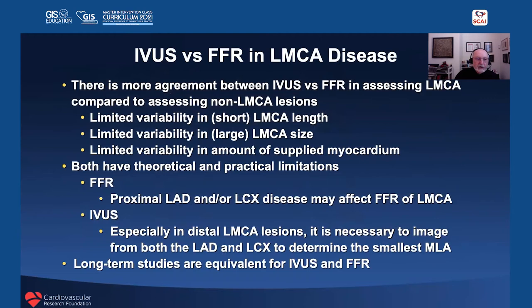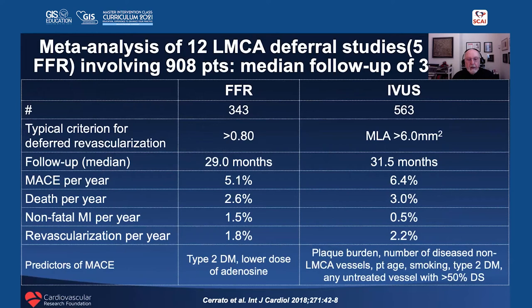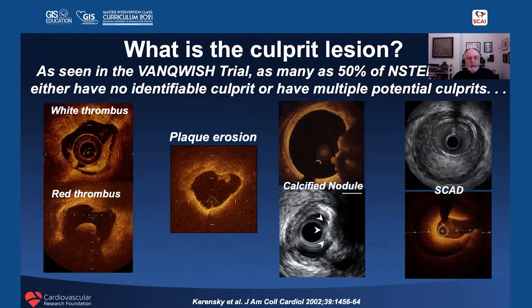The left main is different — of all coronary segments, it has the greatest angiographic inaccuracy and greatest variability in assessment. In one study from 2007, unanimous correct assessment of left main severity was only 29%. Here are two cases of ostial left main disease — which would you treat? It turns out you should treat neither — this is an angiographic artifact. The aorto-ostial junction is the least reliably assessed location by angiography. There are issues with both FFR and IVUS assessment of left main disease, but there is more agreement between IVUS and FFR for left main than for non-left main disease.